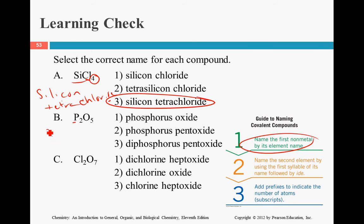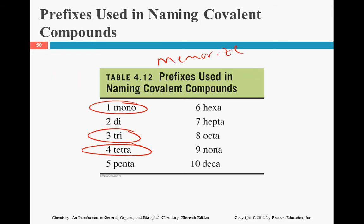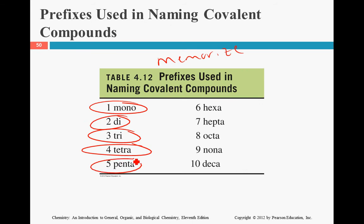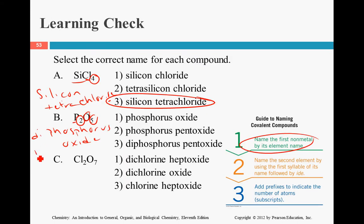We know we have phosphorus. There are two of them; if we look at our list, two is 'di', so it's diphosphorus. We have oxygen, which becomes oxide, and we have five of them. Five is 'penta' — remember the prefix, because the next one starts with an O, the A gets dropped off. So the answer is diphosphorus pentoxide.